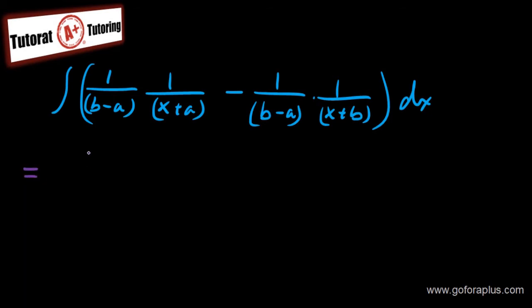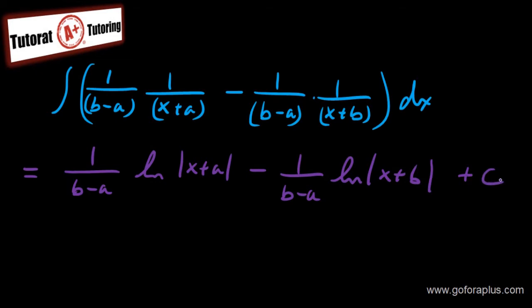So I can say that this is going to be 1 over (b-a), ln of (x+b)... This is basically my absolute value. And then plus c, obviously.